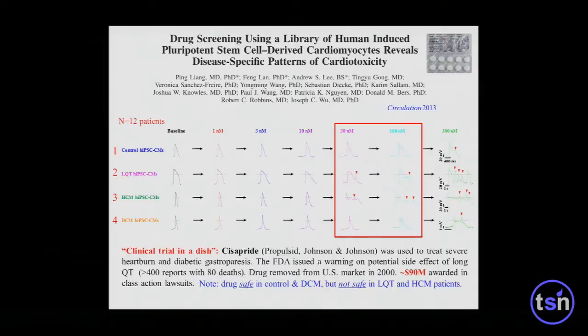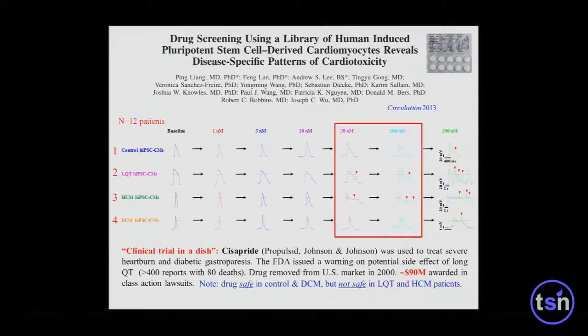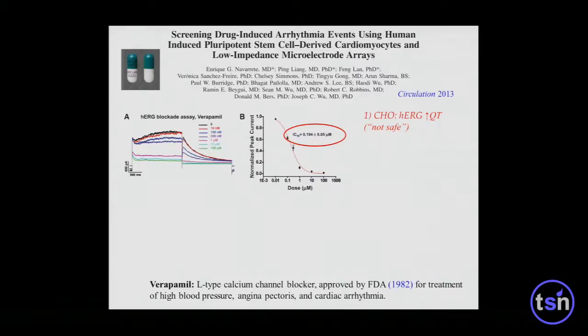This raises the question: why, out of 10 million people who took the medication, were there only 400 reported QT cases and 80 deaths? It's probably patients who had pre-existing disease who got into trouble, while normal patients were fine. Back in 2000, we weren't routinely checking EKGs or echocardiograms when giving this medication. If you had this data during the drug development phase, you would either kill the drug or ask a chemist to reformulate it to remove the risk — an example of how more information helps drug development.